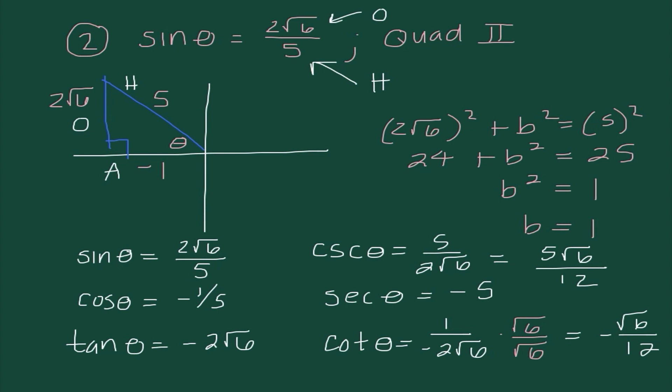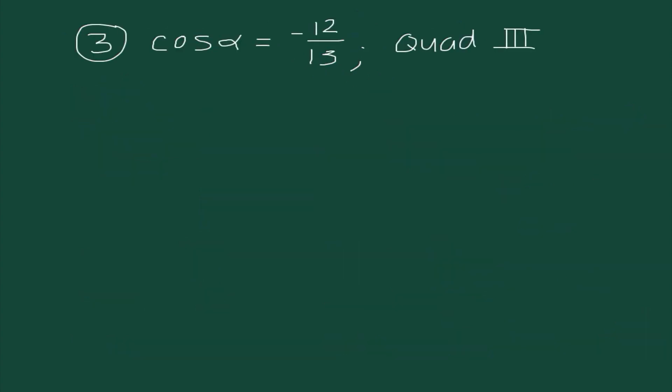When drawing on a graph, I need to be aware of which quadrant I'm drawing into, draw my triangle appropriately into that quadrant, then connect a line to the x-axis. When I use the Pythagorean theorem, I need to remember that the direction of movement affects whether my value is positive or negative.